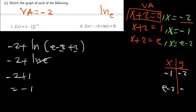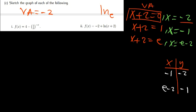Note that e is approximately 2.718, so just know it's approximately 2.7. This means e - 2 is approximately 0.718, which is on the positive side of the x-axis. So e - 2 is a positive x-value. We now have our vertical asymptote and two coordinates to sketch the graph.